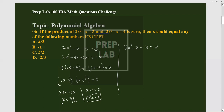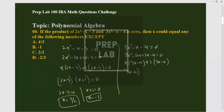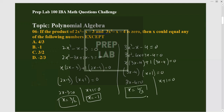Similarly for 3x²-x-4, multiplying 3 and -4 gives -12x², so we break -x into -4x+3x. Factoring gives (3x-4)(x+1) = 0. So 3x-4=0 gives x=4/3, and x+1=0 gives x=-1.